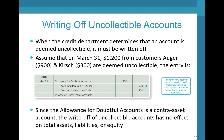How do write-offs work? To write off an uncollectible account, when the credit department deems an account uncollectible, it must be written off. Assume on March 31st, $1,200 from customers Auger and Kirsch are deemed uncollectible. The entry would be to debit the allowance for doubtful accounts for $1,200 and credit the AR subledger accounts for Auger and Kirsch. Since the allowance for doubtful accounts is a contra-asset, the write-off has no effect on total assets, liabilities, or equity.